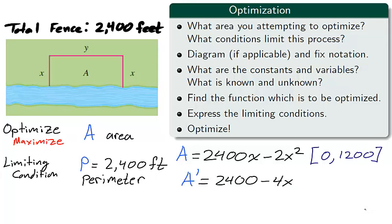The way we will optimize this function is by using the closed interval method introduced in section 3.1. We begin by taking the derivative of A with respect to x. We then find the critical numbers of A prime in the interval 0 to 1200. As A is a polynomial, the only critical numbers of A are when A prime is equal to 0. That is, when x is equal to 600.